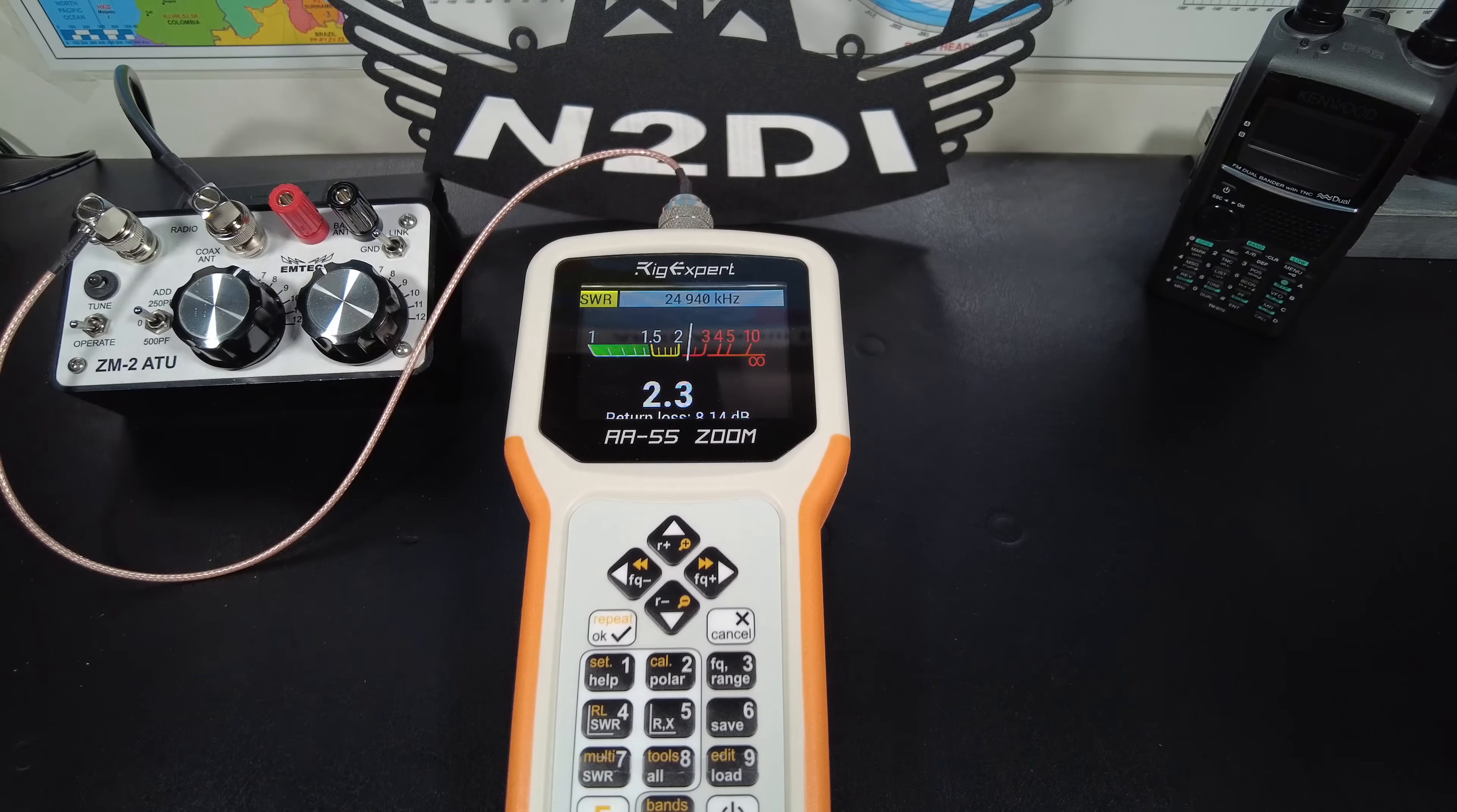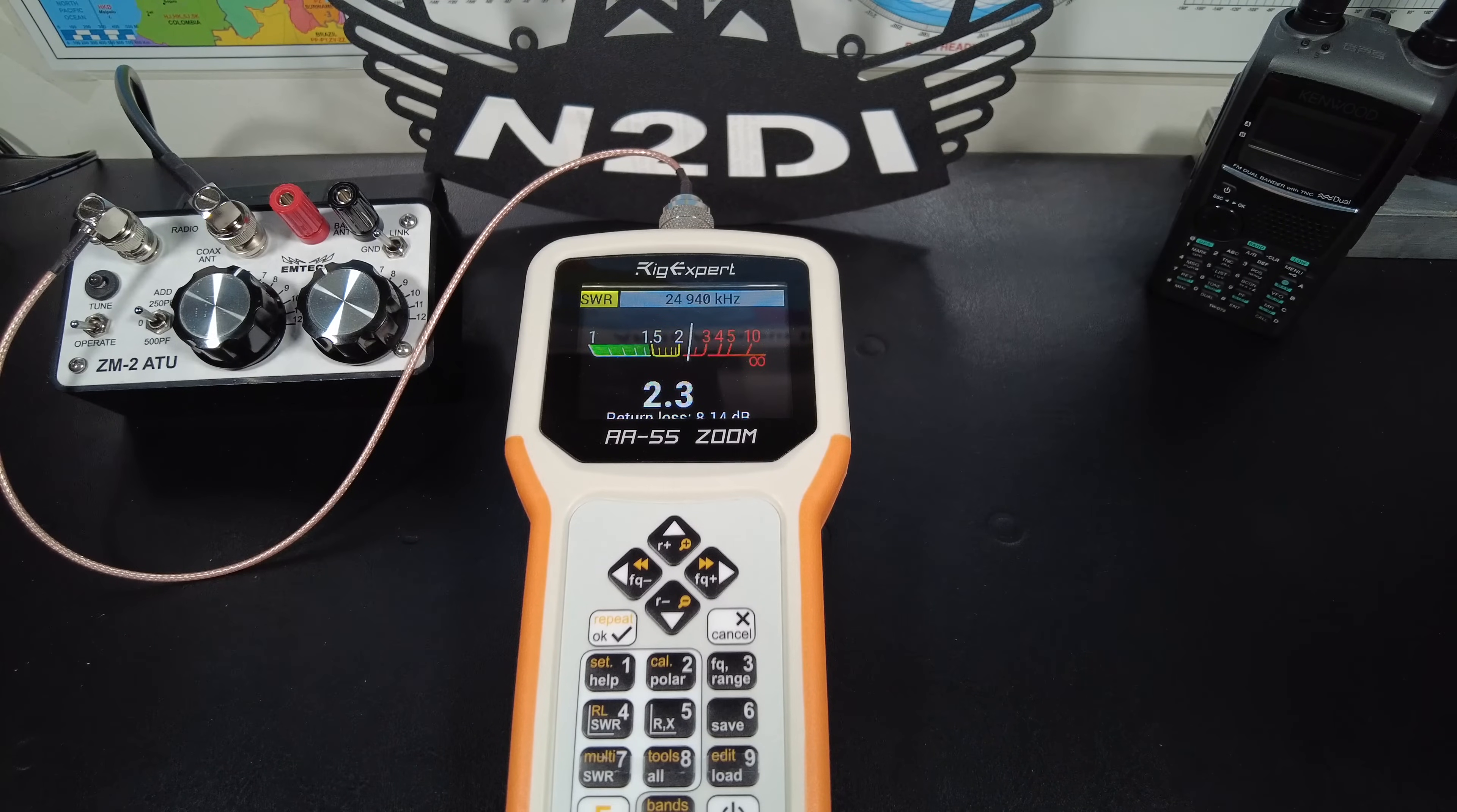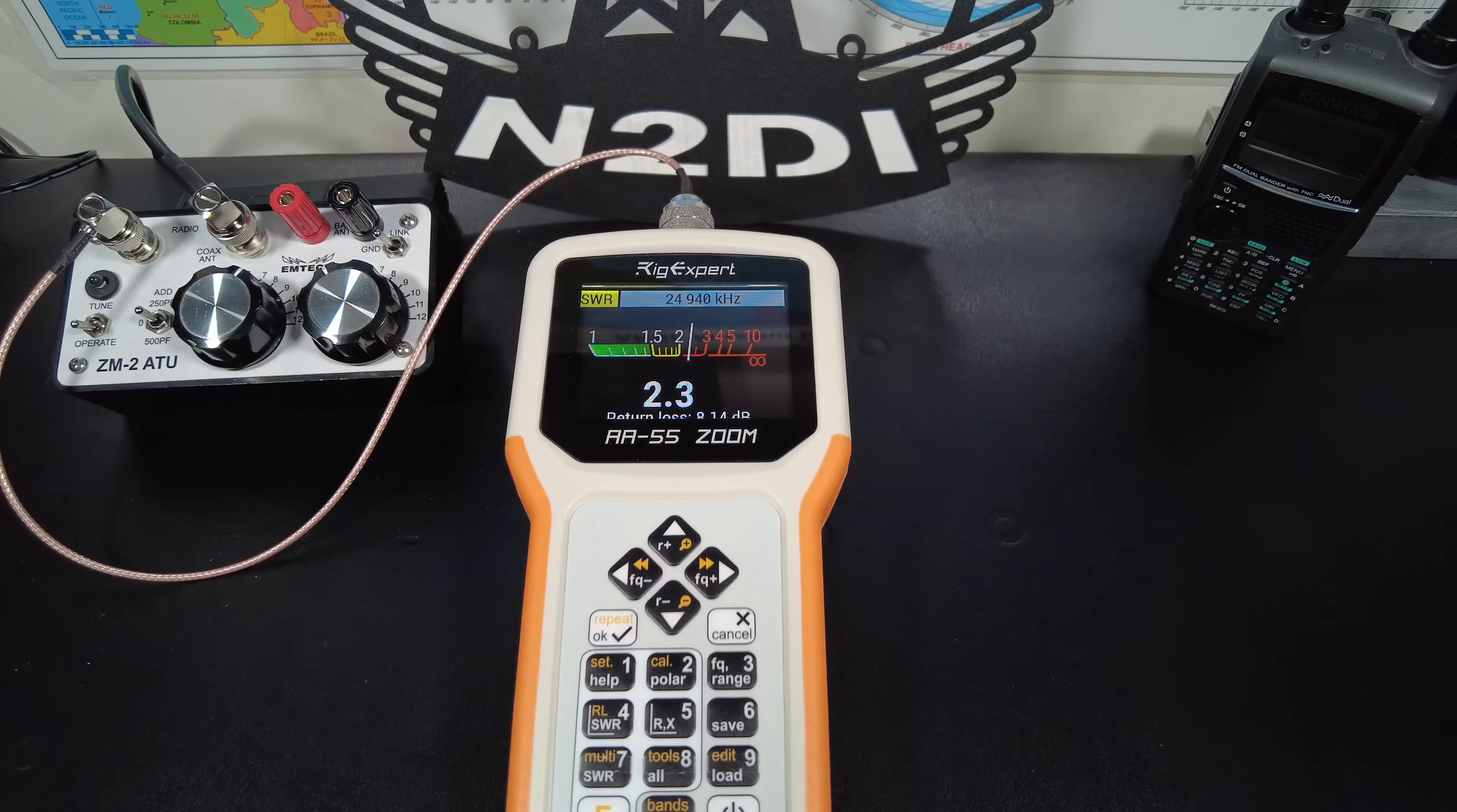The antenna analyzer is pretty high in the list of things that you should purchase when you're starting out in HF. If you're a tech and you're only using VHF or UHF, then it's not really necessary. But for HF, it should be pretty high on your list. You definitely need a power supply, a radio, and an antenna. But immediately following that, you should get an antenna tuner and an antenna analyzer. Can you get by without an antenna analyzer? The short answer is yes, but it's difficult, especially when you're just starting out and you don't understand things yet.